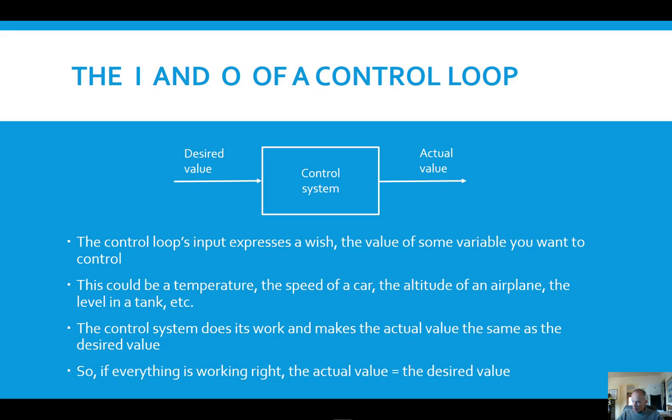From the top viewpoint, the control loop's input expresses a wish, the value of some variable you want to control. This could be a temperature, the speed of a car, the altitude of an airplane, level in a tank - there are countless examples that could be mentioned.